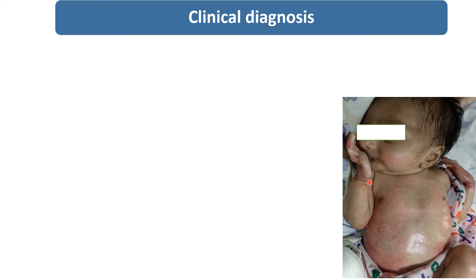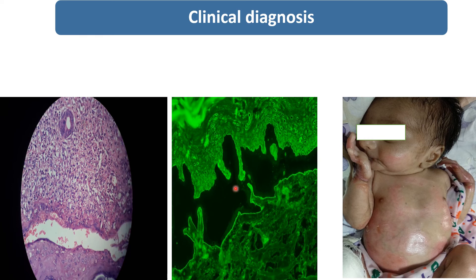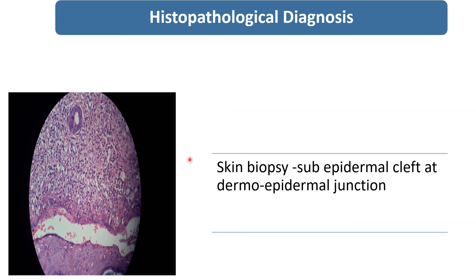I have published this case in our journal. Skin biopsy was also taken. This is the histopathology image showing the sub-epidermal cleft at the junction of dermis and epidermis. Even direct immunofluorescence of the skin biopsy is showing multifocal IgG and C3 deposits at the basement membrane with sub-epidermal blister formation.